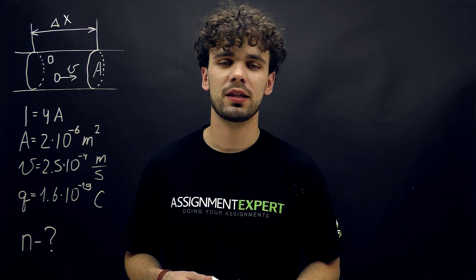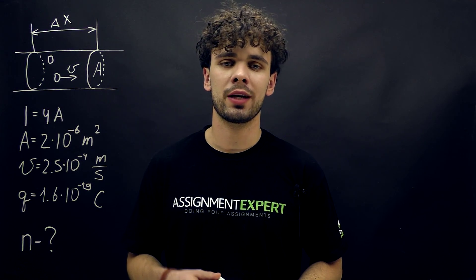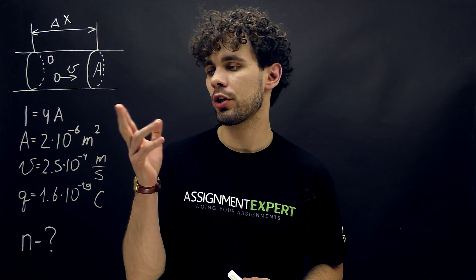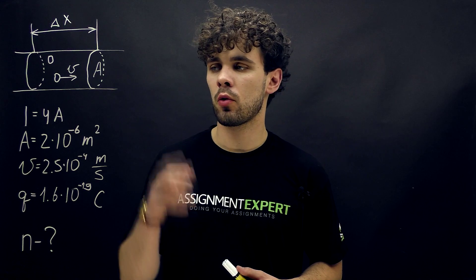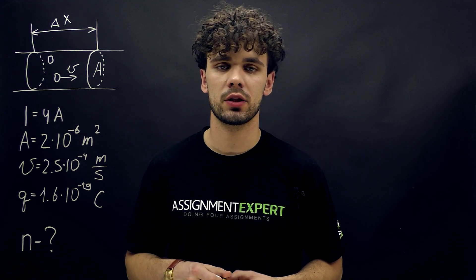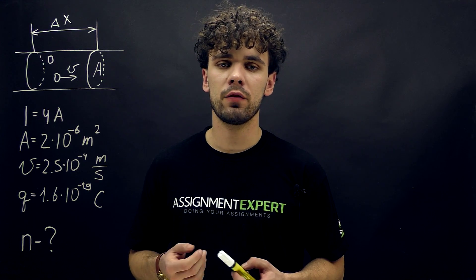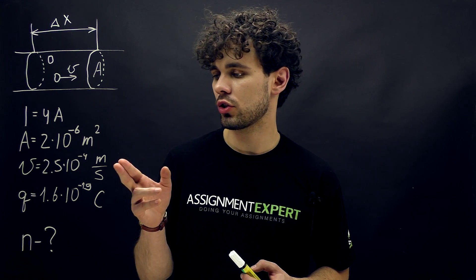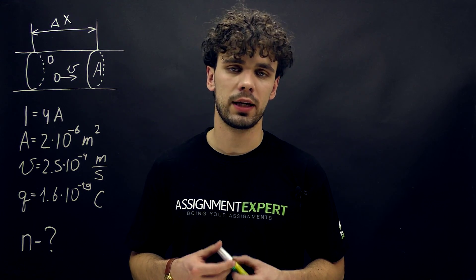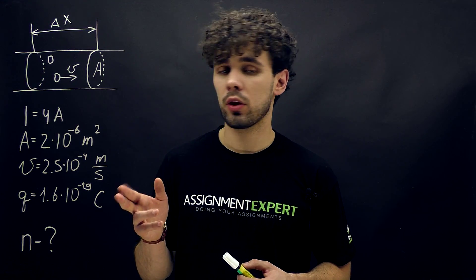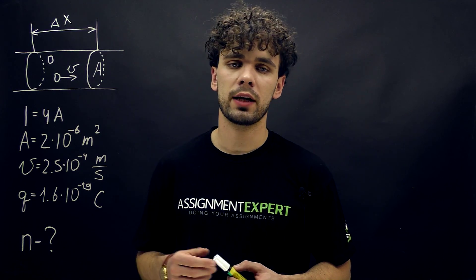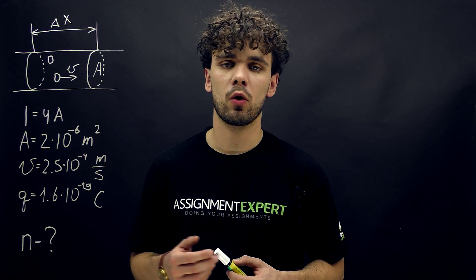Hi guys! This is Assignment Expert, and today we have a task from Daniel from Nigeria. A steady current of 4 Amperes passes through a wire with a cross-section of 2×10⁻⁶ m². The average speed of electrons in these conditions is 2.5×10⁻⁴ m/s. We also know the charge of the electron. Our task is to find the total number of electrons in the unit volume of this wire.